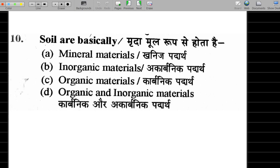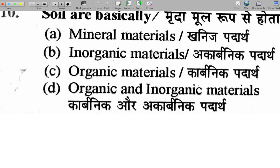Final question: what is soil basically? Soil contains a lot of inorganic materials as well as organic materials — it is a mixture of both. That is why we can say soils are basically organic as well as inorganic materials, so option D is correct. Today we discussed 10 questions; the next part will discuss questions 11 onwards. Thank you.